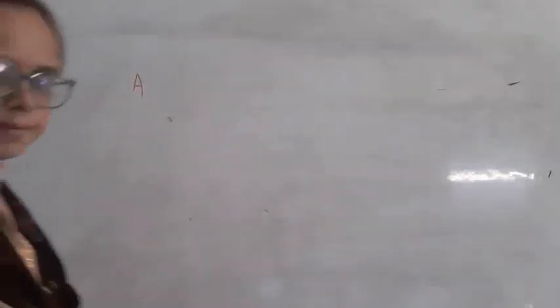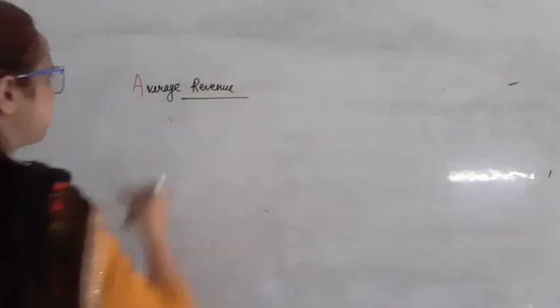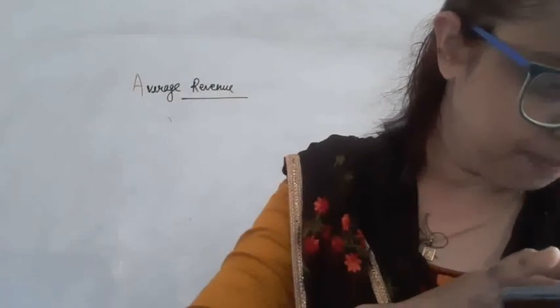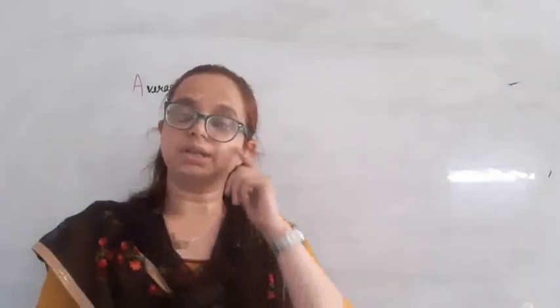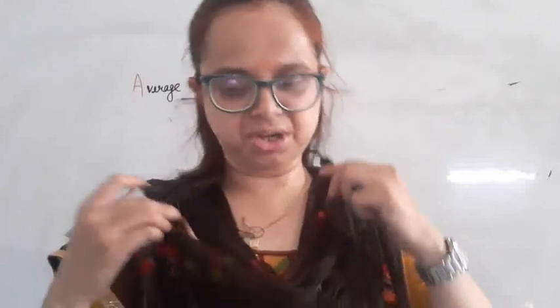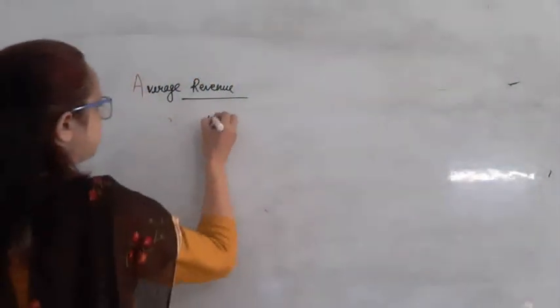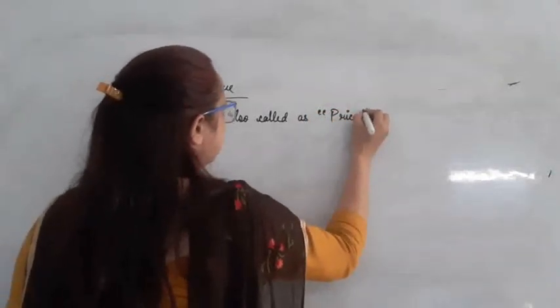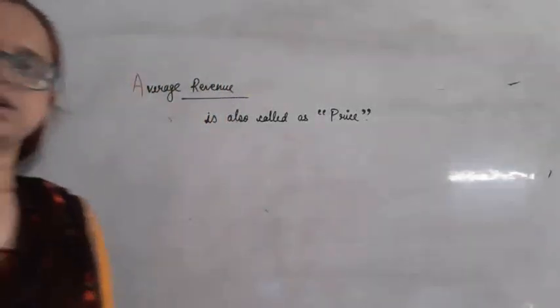The next concept is average revenue. Average revenue is the per unit revenue received from the sale of a commodity. It is the per unit income received from the sale of a given quantity of output. Average revenue is also called the price.